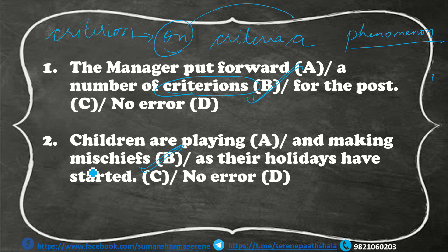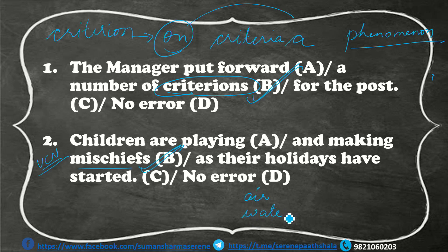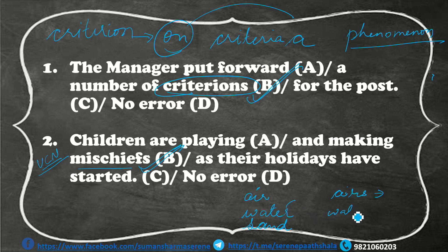Kyun? Kyunki 'mischief' — yaini musti — ko gina nahi jaa sakta, ek musti, do musti. Musti toh uncountable noun hai, aur uncountable ka hum plural nahi banate. Agar maan lijiye kisi uncountable ka plural banaya bhi — jaisi air, water, sand — toh aisa karne se meaning change ho jata hai. Air ka matlab hai hawa, lekin airs ka matlab hai show off, dikhawa. Water ka matlab hai paani, lekin waters ka matlab hota hai seas, oceans.